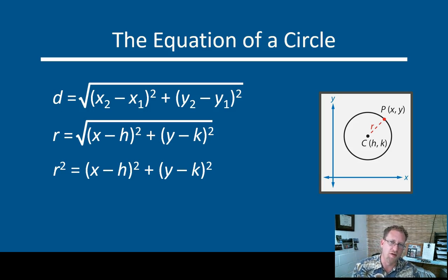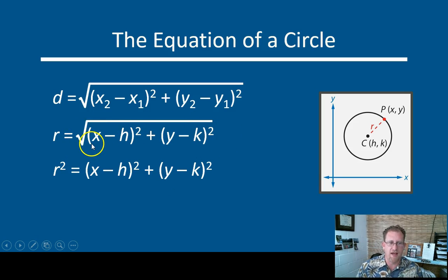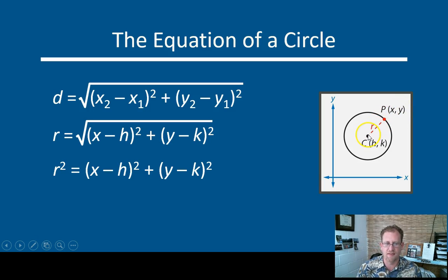h and k are the coordinate points for the center of my circle. The distance from the center of the circle to a point on it is the radius, so I'm just going to change d to r in this equation. For x1 and y1, which are the center of the circle, we're going to replace them with h and k. So the square root of (x minus h) squared plus (y minus k) squared is the radius. That gives us the length of the radius.